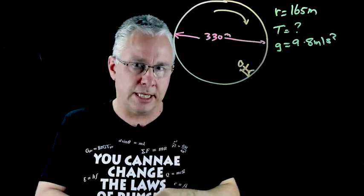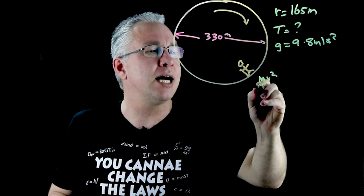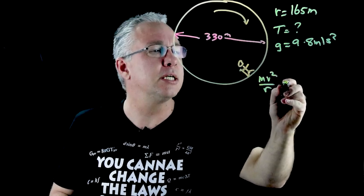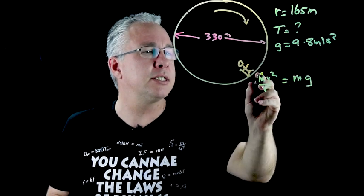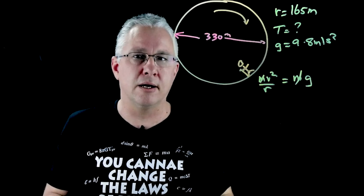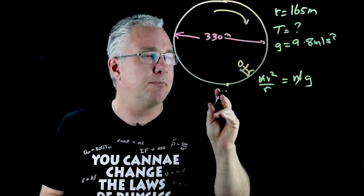So the first thing to remember is our concept here which says that mv squared over r, which is our centripetal force, is equal to the normal force that the astronaut experiences. Now you see that the mass of our Dr Bowman is inconsequential so we can remove that, but the fact is we don't know v.